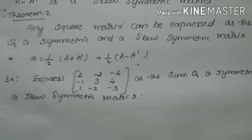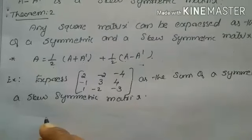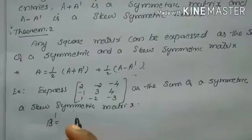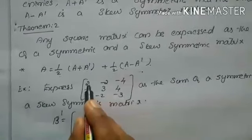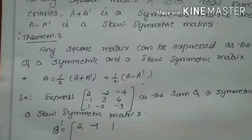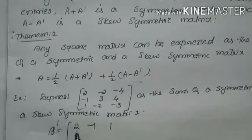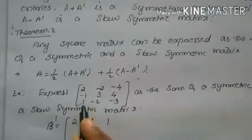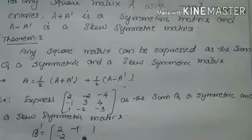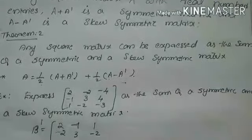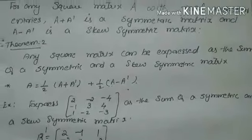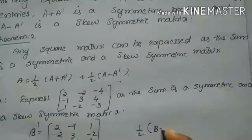Let us start. Name the given matrix as B. We find B dash, the transpose of B. To find the transpose, write the first column as the first row. So B transpose equals: first row 2, minus 1, 1; second row minus 2, 3, minus 2; third row minus 4, 4, minus 3. Our next step is to find half into B plus B dash.